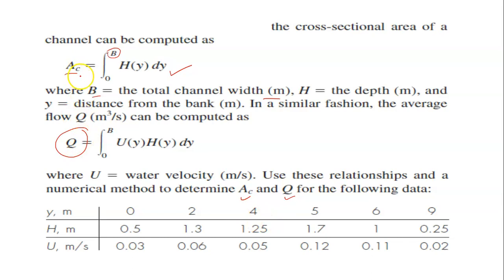So AC in this case is just the integral of H dy, meaning you just integrate these two sets of data only. And for the flow rate Q, you need to do the integral of U times H. So what you have to do, you need to create another column here, U times H.